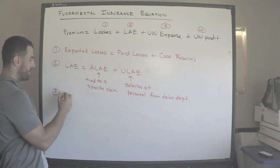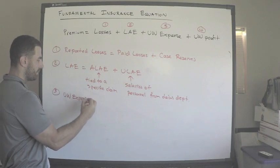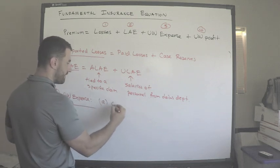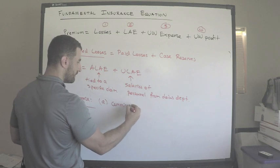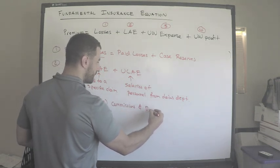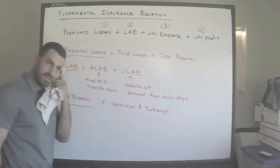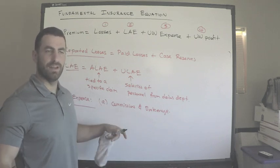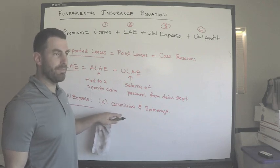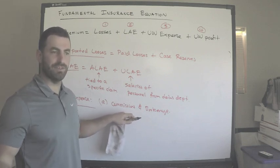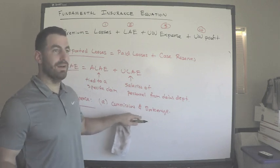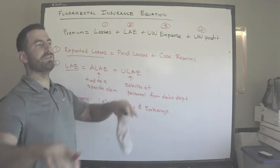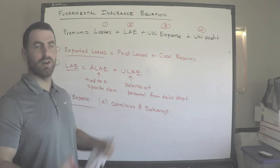Number three: underwriting expenses. We have several sub-items. First, commissions and brokerage — when insurance agents or brokers generate business for our company, we pay them. This is usually tied to the volume of business they generate or the quality of that business, because we want to write profitable business, not just issue a bunch of policies to people who will cause a lot of claims.